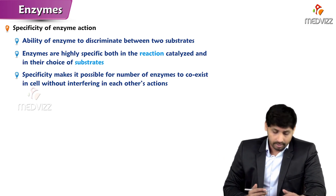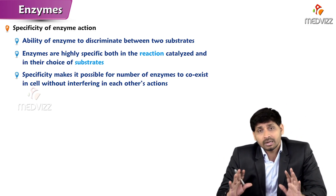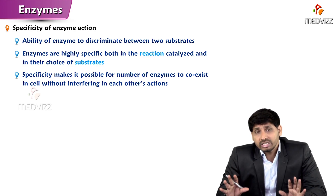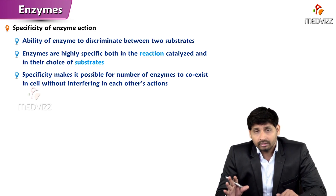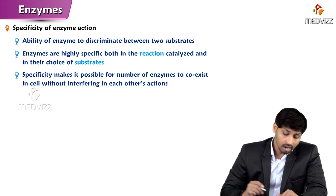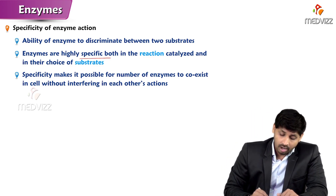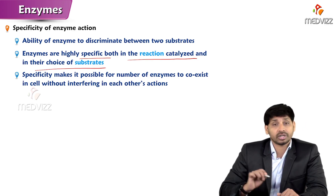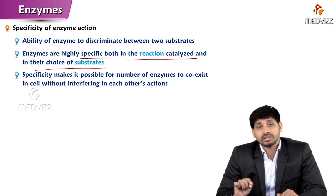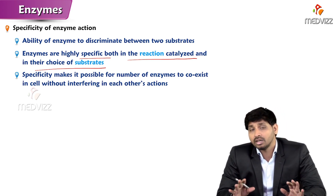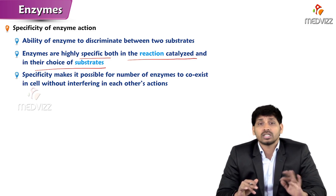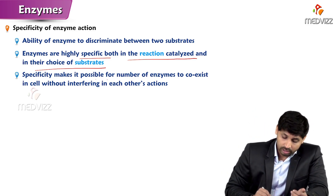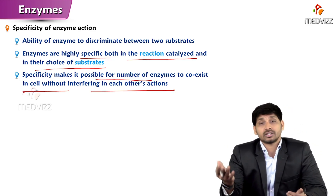The ability of enzymes to discriminate between two substrates — that means on which substrate to work — is a key characteristic. Enzymes are highly specific both in the reaction catalyzed and the choice of substrate. Specificity makes it possible for a number of enzymes to coexist in the cell without interfering with each other's actions.